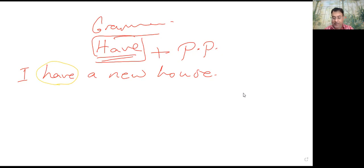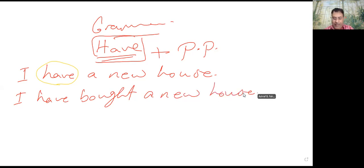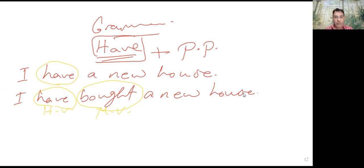ولكن لما أقول 'I have bought a new house,' هنا الوضع اختلف. هنا 'have' بقت helping verb، لأن 'bought' هي الـ main verb. يبقى علشان أعمل meaning من verb to have وهي helping verb، لازم يجي وراها verb.